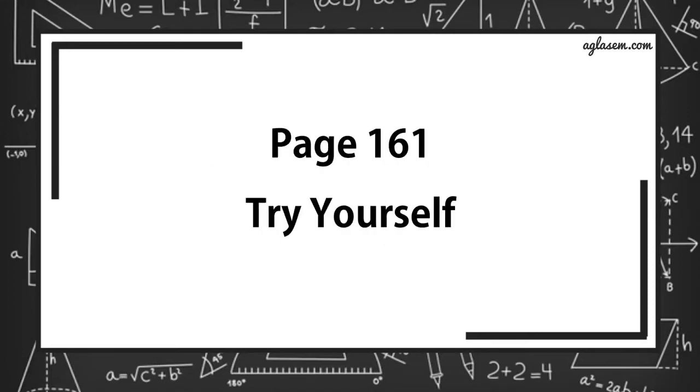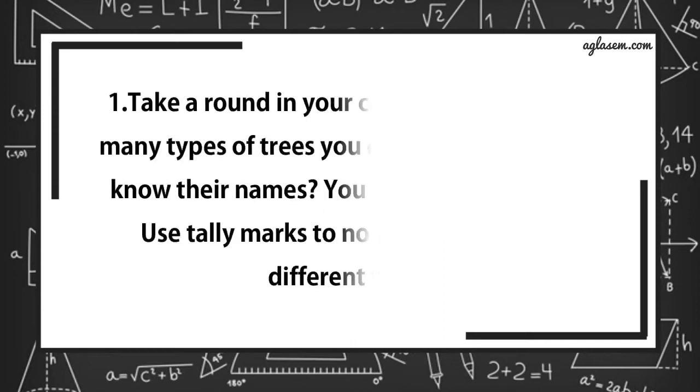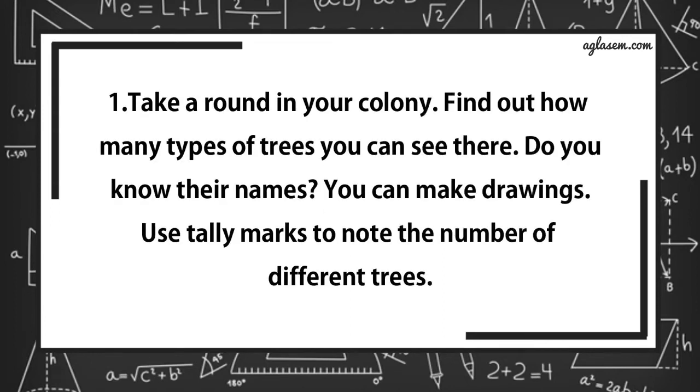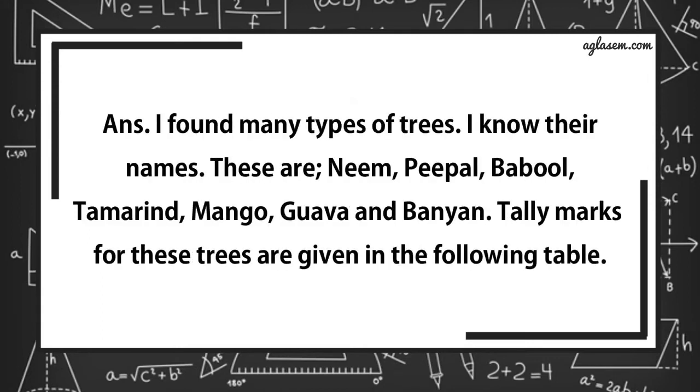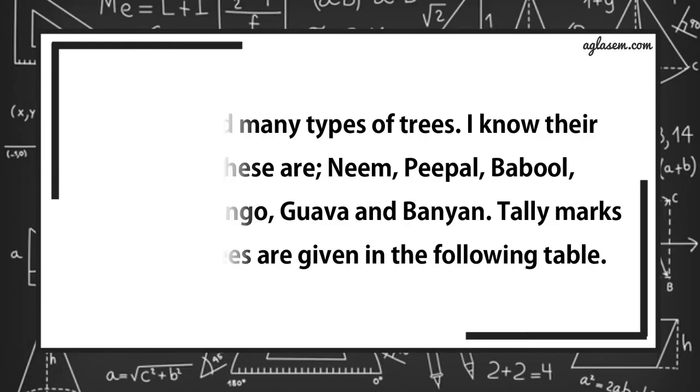Now, turn to page number 161. Try yourself. Question number 1 says, take a round in your colony. Find out how many types of trees you can see there. Do you know their names? You can make drawings. Use tally marks to note the number of different trees. Answer is, I found many types of trees. I know their names. These are neem, peepal, babool, tamarind, mango, guava, banyan. Tally marks of these trees are given in the table.